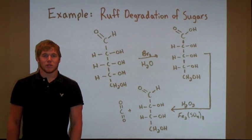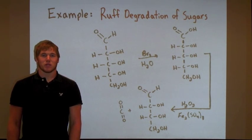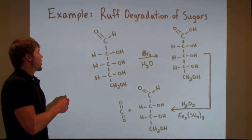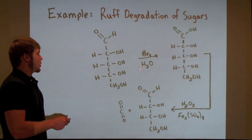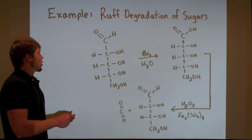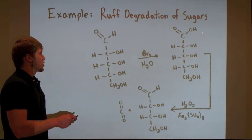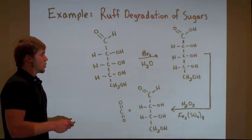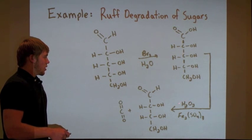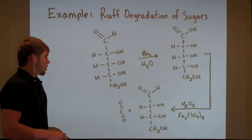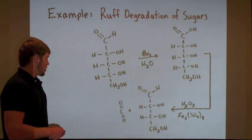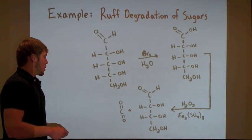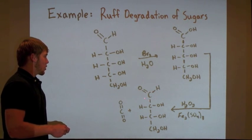As an example of this type of decarboxylation, let's look at the Ruff degradation of sugars. Here, the aldehyde of ribose in the presence of aqueous bromine undergoes oxidation to the carboxylic acid, ribonic acid. The carboxylic acid with subsequent addition of hydrogen peroxide and iron(III) undergoes radical decarboxylation to yield carbon dioxide and erythrose, upon ensuing oxidation of the topmost carbon.